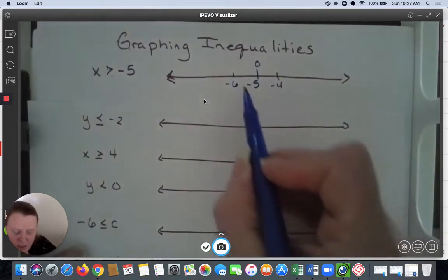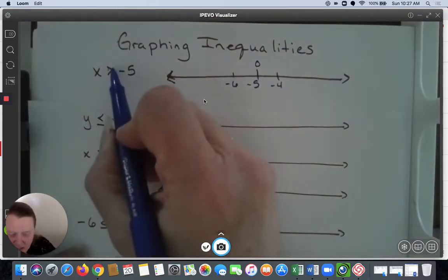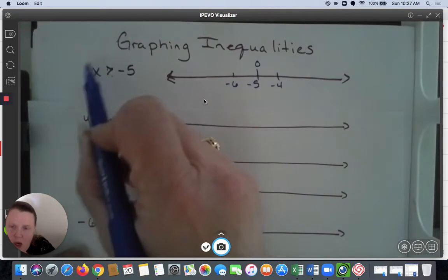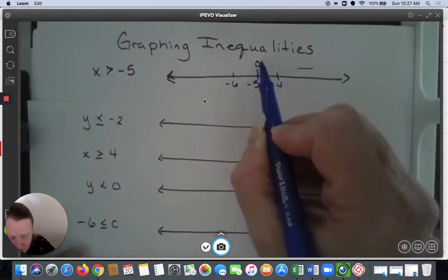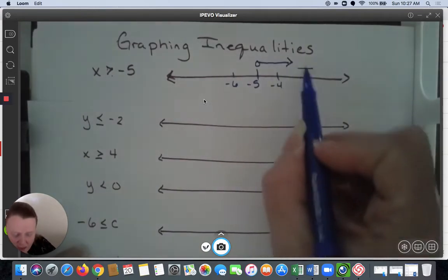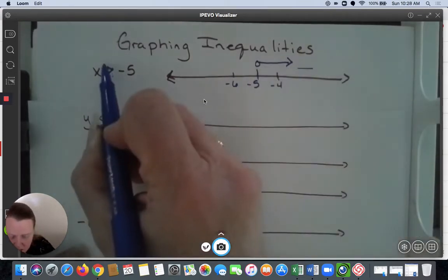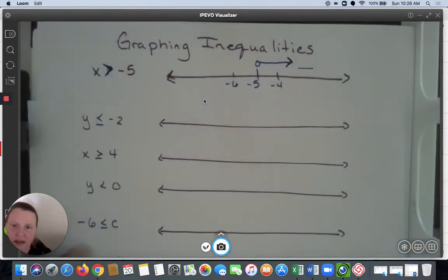Some teachers like to put the circle on the number line itself. My handwriting is such that I like mine to float above. See how it's pointing towards -5, and we want numbers larger than that. Larger numbers go on this side, so I'm going to draw my arrow like that. What you should notice is that the symbol here should match the symbol here if my letter is first.